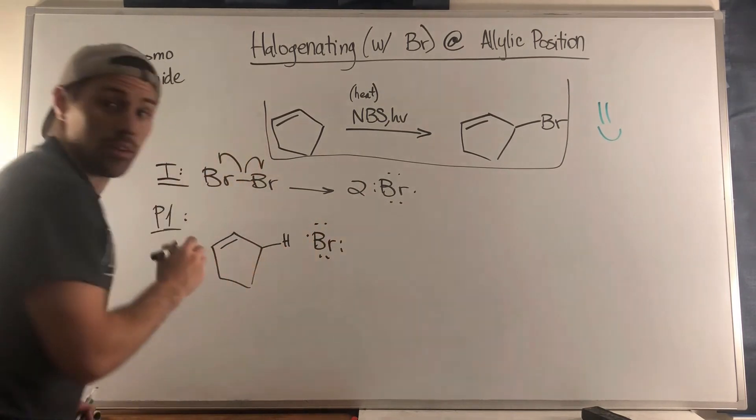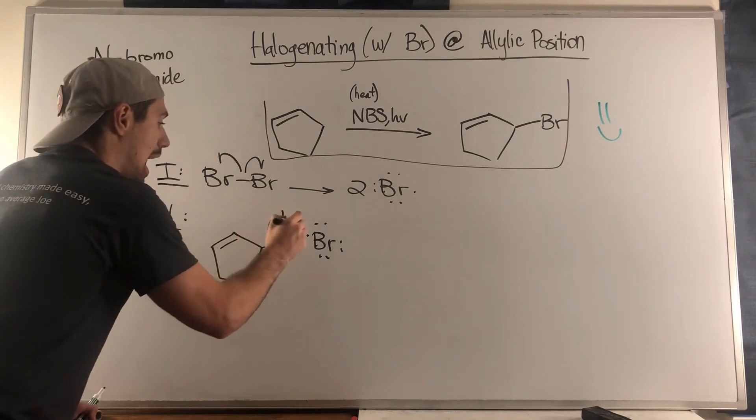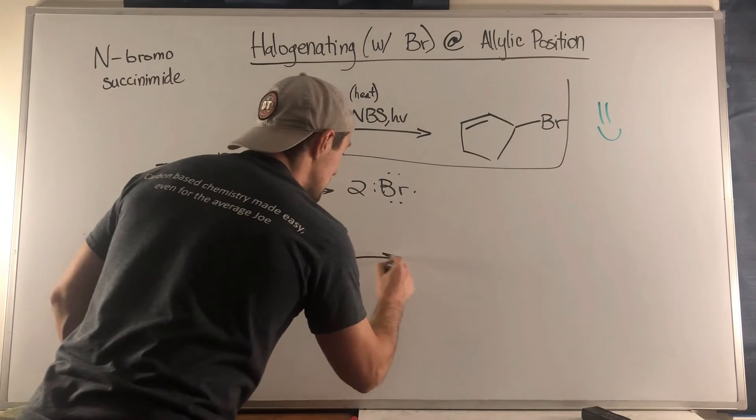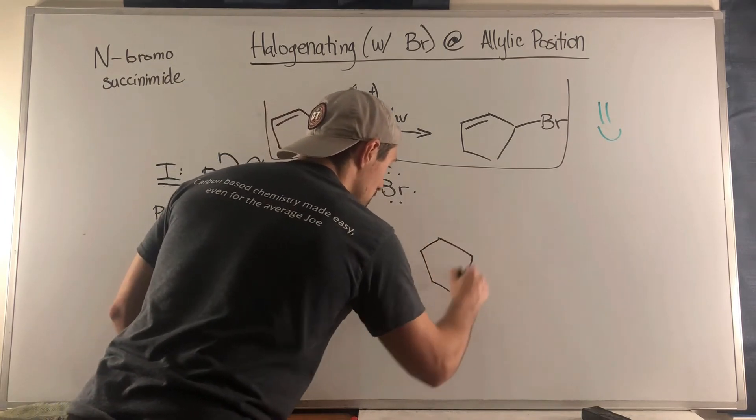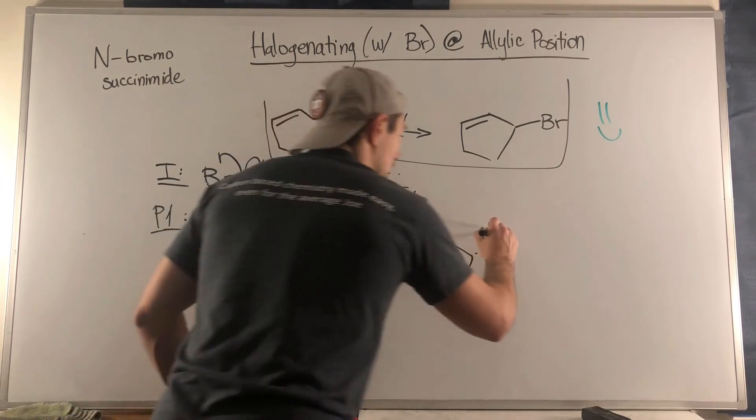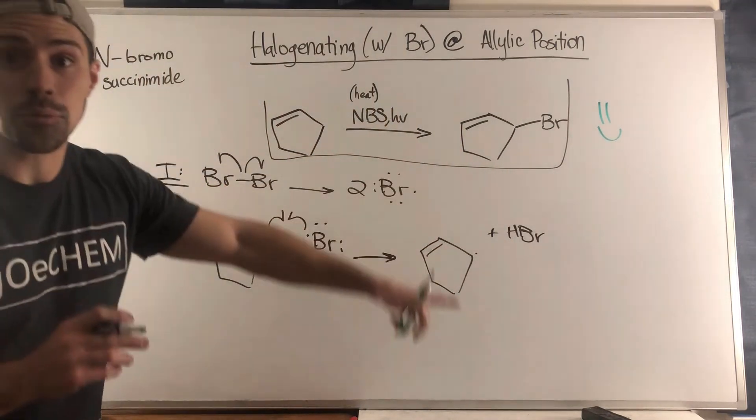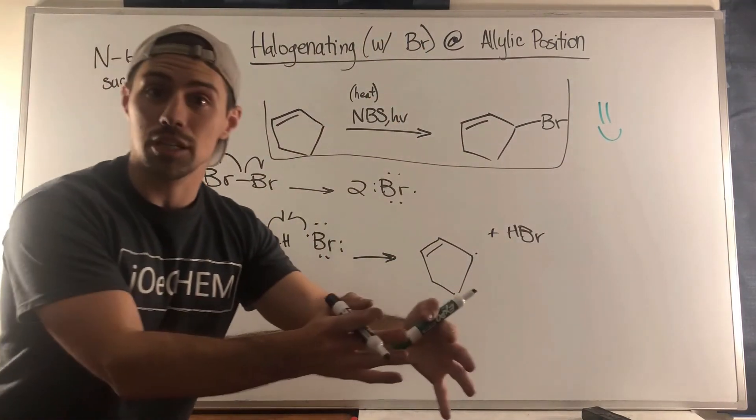You bring in a bromine radical, then hydrogen gets plucked off by the bromine radical. We create our now very stable allylic radical, so we do make HBr as a byproduct which will help us create more lower concentrations of Br2 from the NBS.